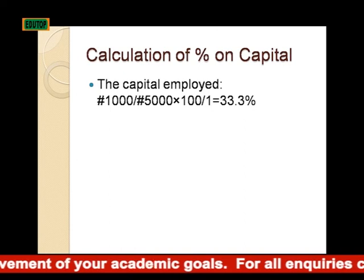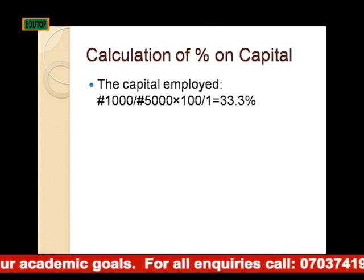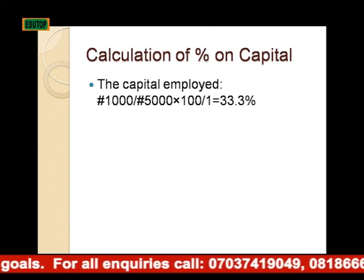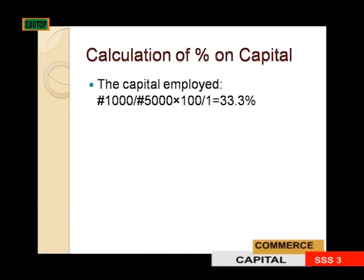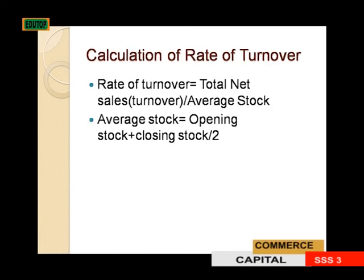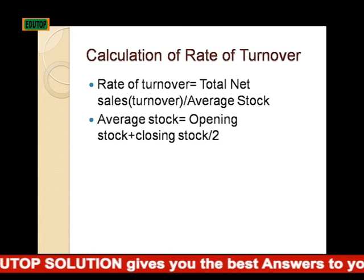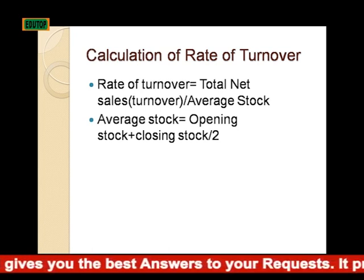Calculation of percent on capital employed: net profit of 1,000 euros over total sales of 5,000 euros times 100 gives 33.3 percent. Rate of turnover: rate of turnover is calculated as total net sales (turnover) divided by average stock.